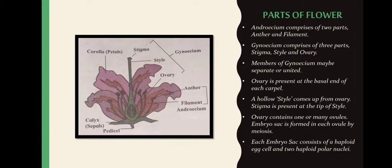Each embryo sac consists of a haploid egg cell and two haploid polar nuclei — we will see the composition of the embryo sac in detail when we study double fertilization. In the diagram you can also see corolla (petals), calyx (sepals, the green leaves), and the pedicel, which is a stem-like structure that attaches the flower to the stem.